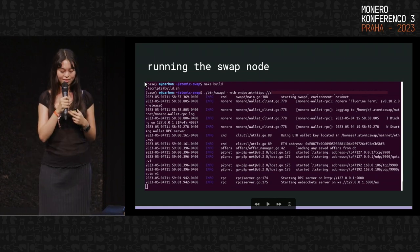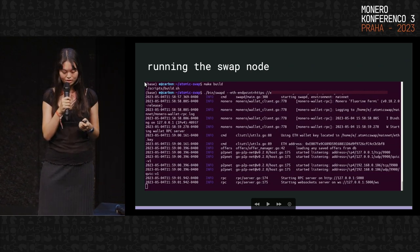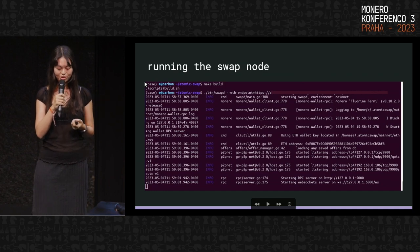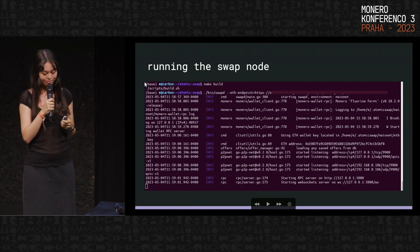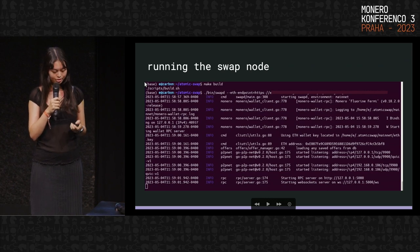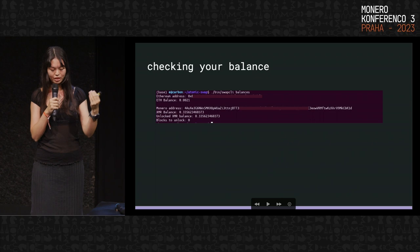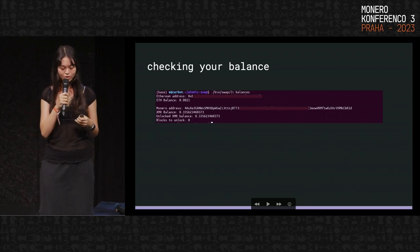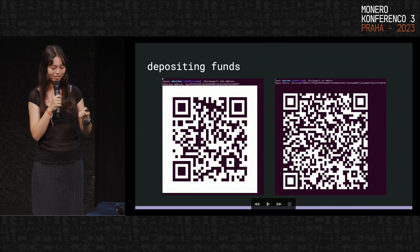Essentially you just build it and then run the swapd binary, and then pass in an Ethereum endpoint — you can run your own node or use remote endpoints. This will run it and you'll automatically connect to the mainnet network. You can also check your balances — the swap node contains an ETH private key and a Monero private key in a wallet. You can deposit funds as well; there's a QR code in the terminal, which is kind of cool.